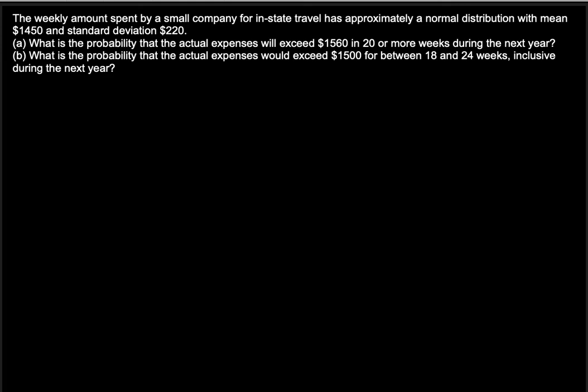The weekly amount spent by a small company for in-state travel has approximately a normal distribution with a mean of $1450 and standard deviation of $120. We need to find the probability that the actual expenses will exceed $1560 in 20 or more weeks during the next year.